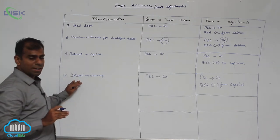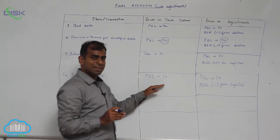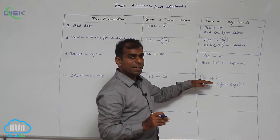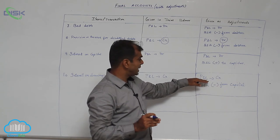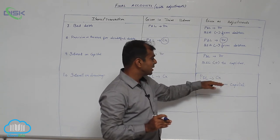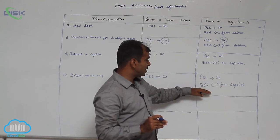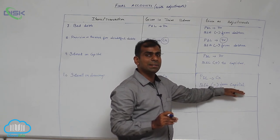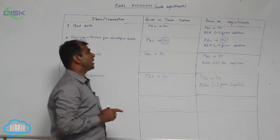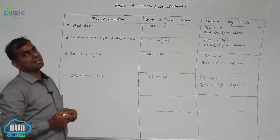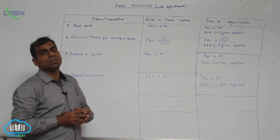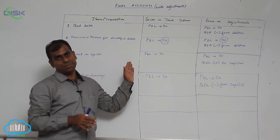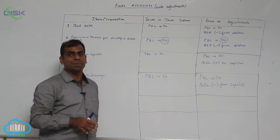Now, interest on drawings. If given in the trial balance, take it in the P&L account credit side. If given in adjustment, take it in the P&L account credit side, and then in the balance sheet on the liability side, minus it from the capital. Hope you make note of all this, and use it as a reference whenever you are solving problems.